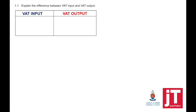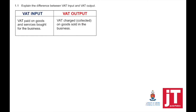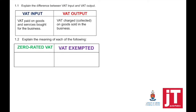Question 1.1: Explain the difference between VAT input and VAT output. VAT input is VAT paid on goods and services bought for the business. VAT output is VAT charged and collected on goods sold in the business. Question 1.2: Explain the meaning of zero-rated VAT and VAT exempted. Zero-rated: basic essential items on which the VAT rate is 0% — VAT is charged but at 0%. VAT exempted: items that by law have no VAT levied on them.